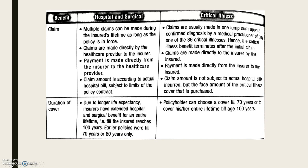Regarding duration of cover: due to longer life expectancy, insurers have extended hospital and surgical benefits for an entire lifetime until the insured reaches 100 years old. Earlier policies covered only until 70 or 80 years. Critical illness policyholders can choose cover from 70 years old up to their lifetime until the age of 100 years.